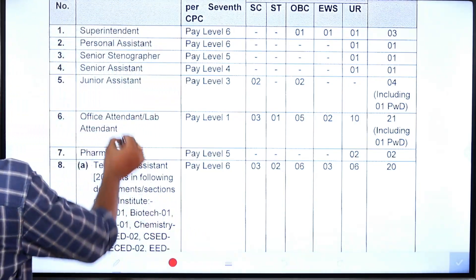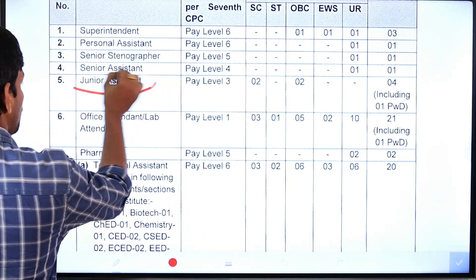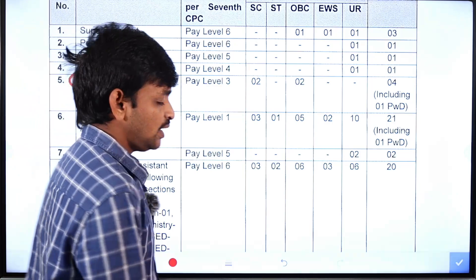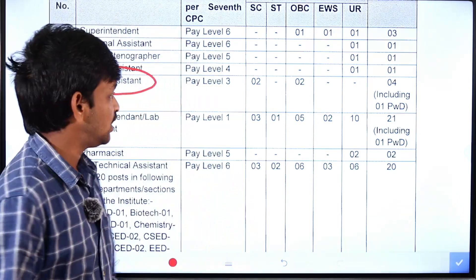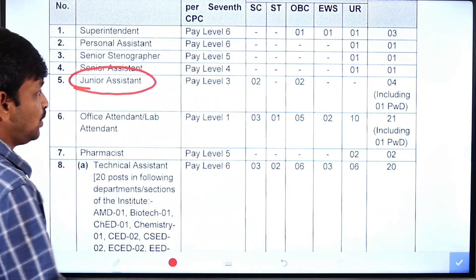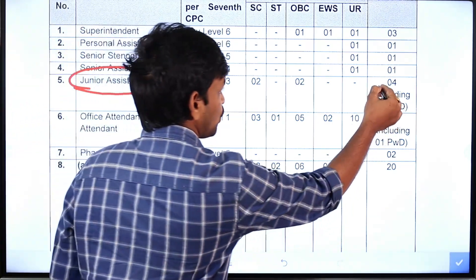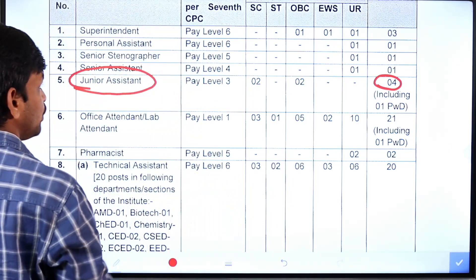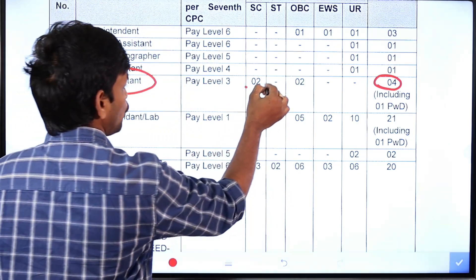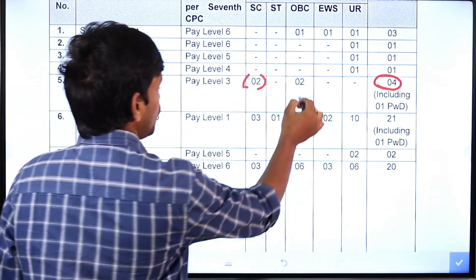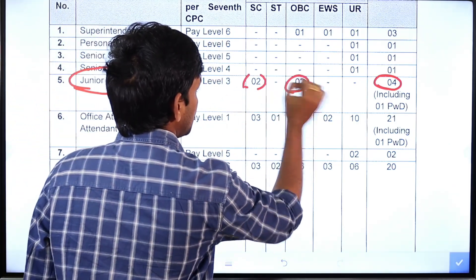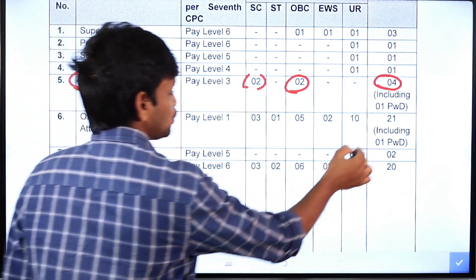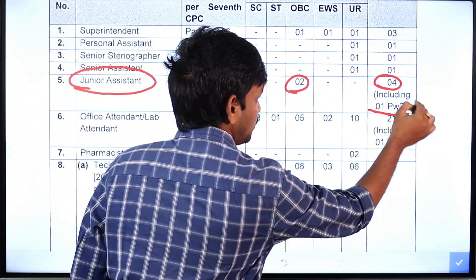First of all, we have to check the Junior Assistant post. If you check the Junior Assistant, there are 4 vacancies available. There are two categories — SC and OBC — if you check the vacancies. There is also a post under the disability category.